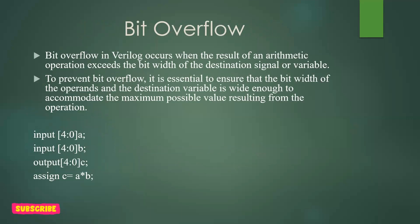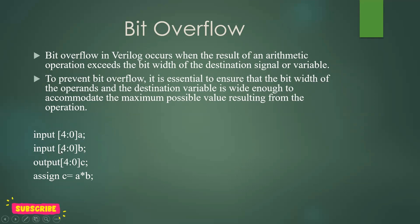Next is bit overflow. This is another common error that the lint tool checks — whether there is any bit overflow in the code. Bit overflow in Verilog occurs when the result of an arithmetic operation exceeds the bit width of the destination signal or variable. For example, adding 5 + 6 gives 11, a two-digit result. Similarly when multiplying A and B and assigning to C, if all three are declared as [4:0], the result of the multiplication may require more bits than [4:0] can hold, causing a bit overflow.